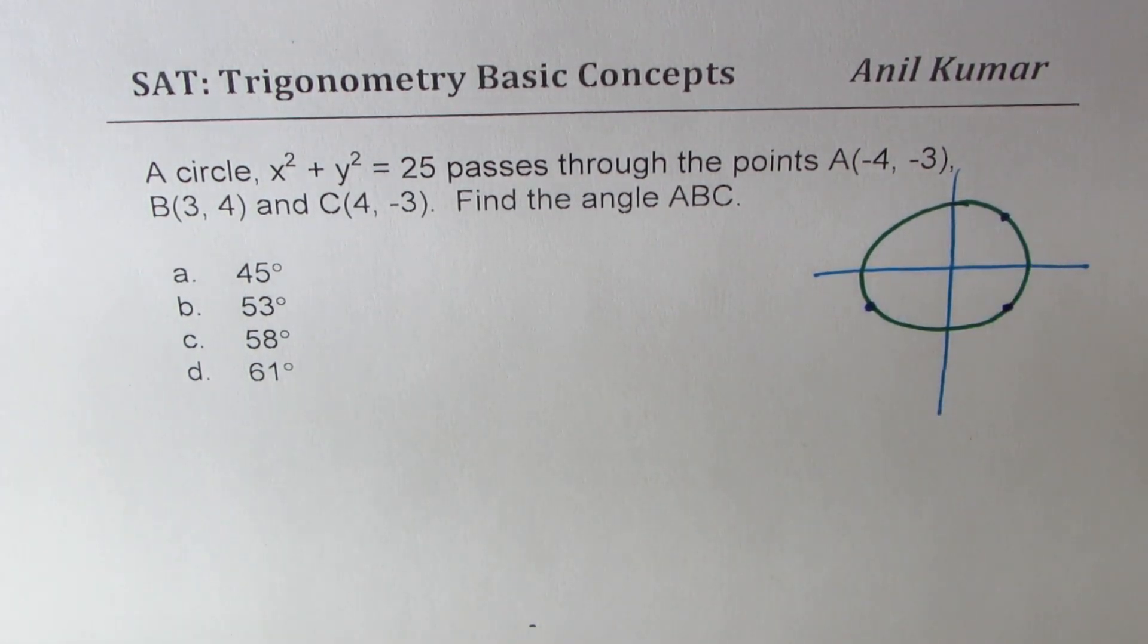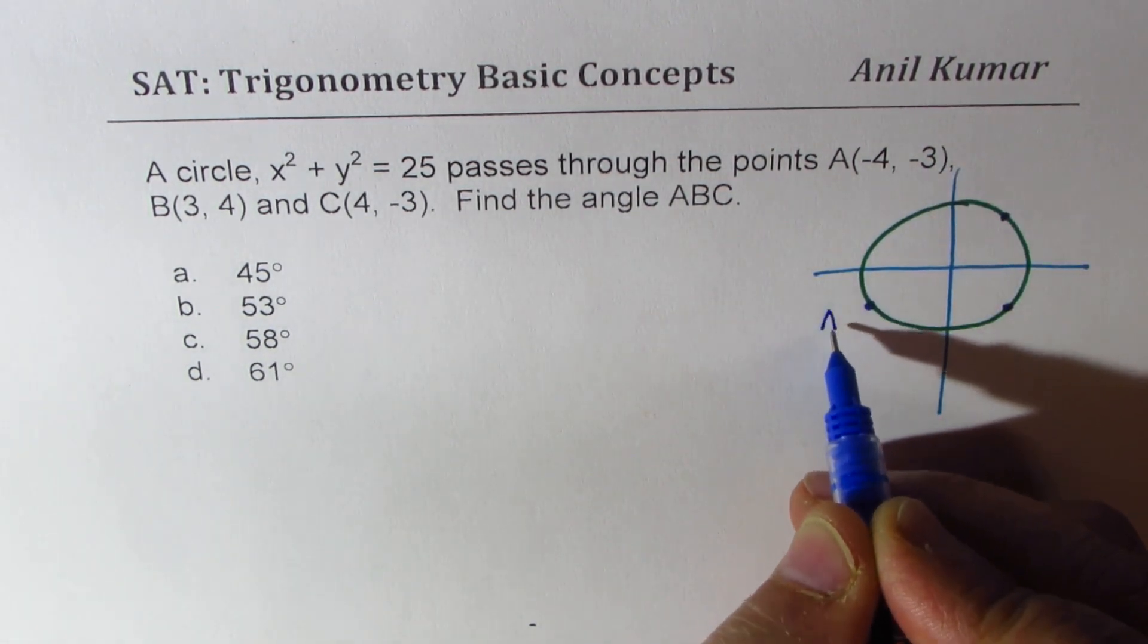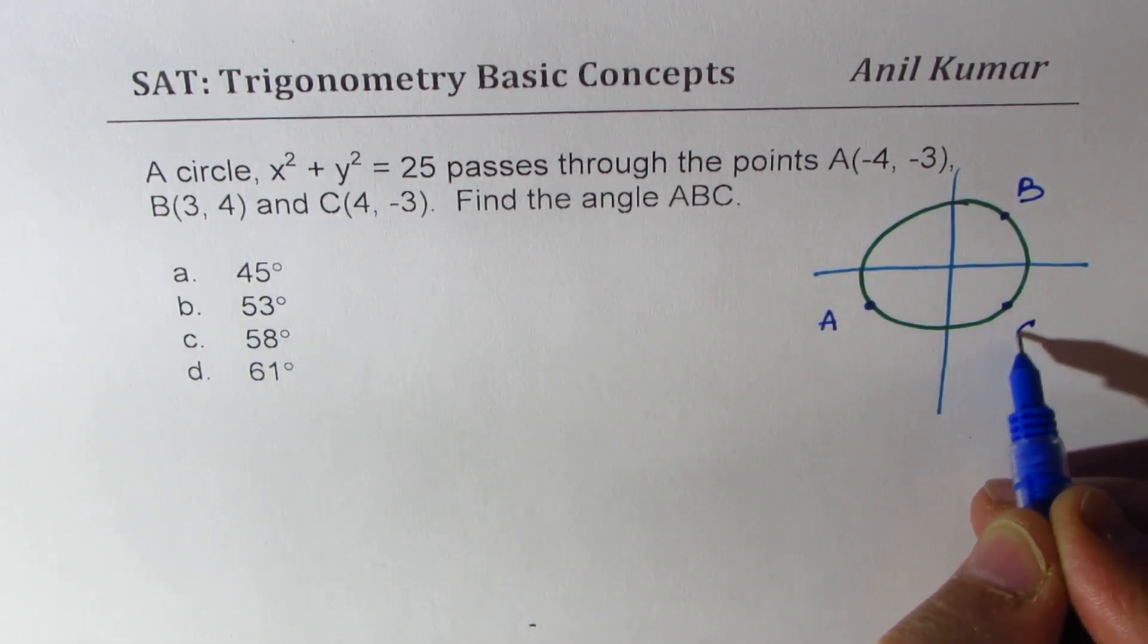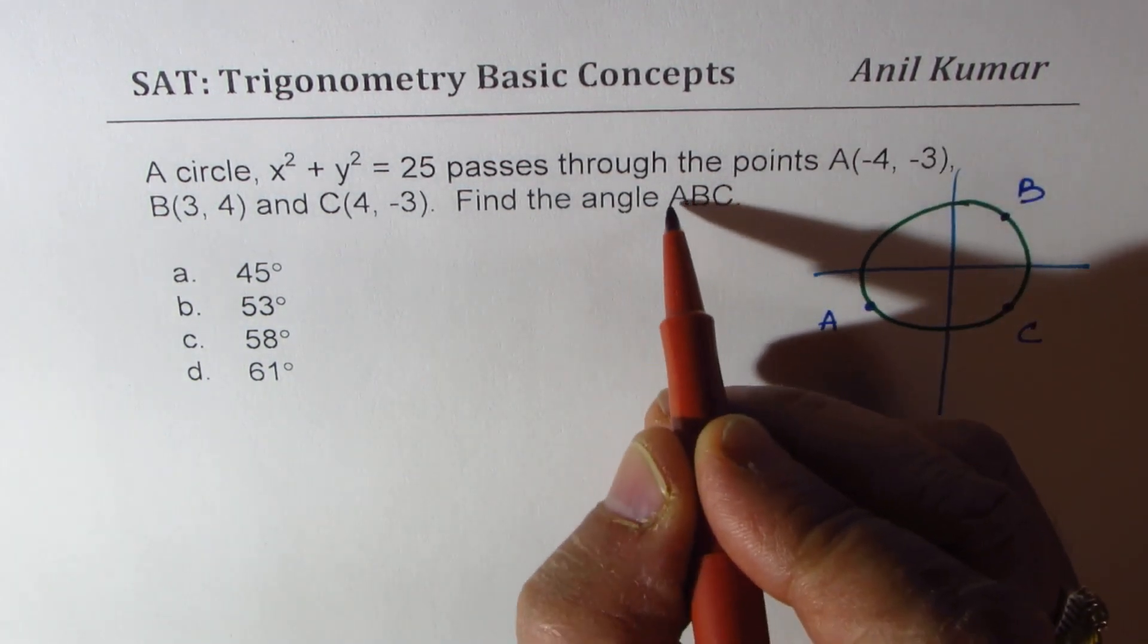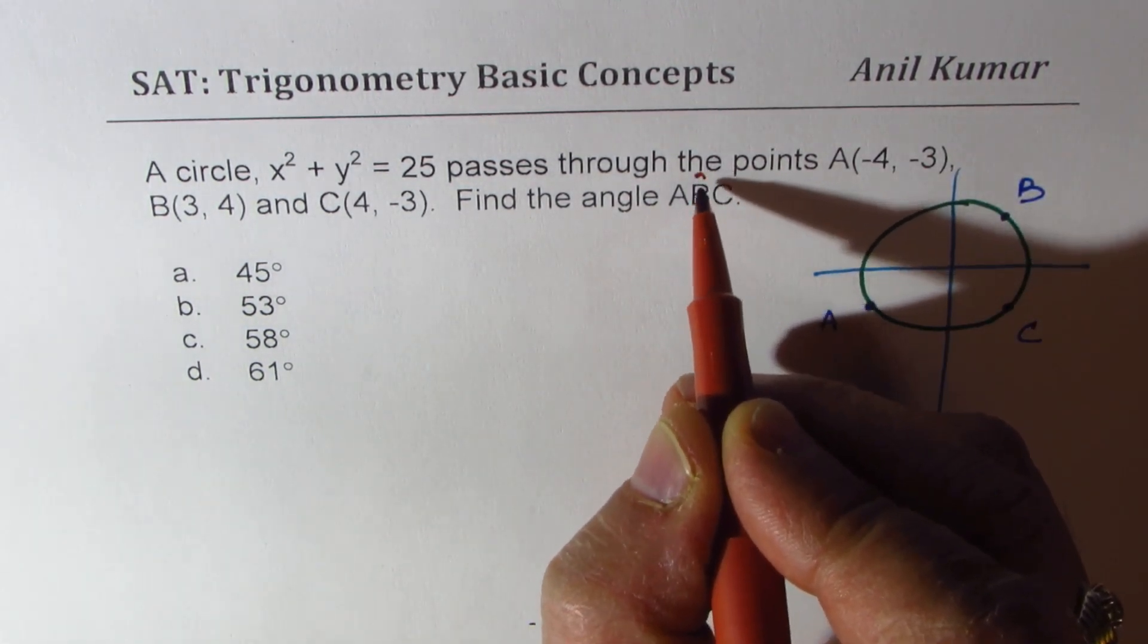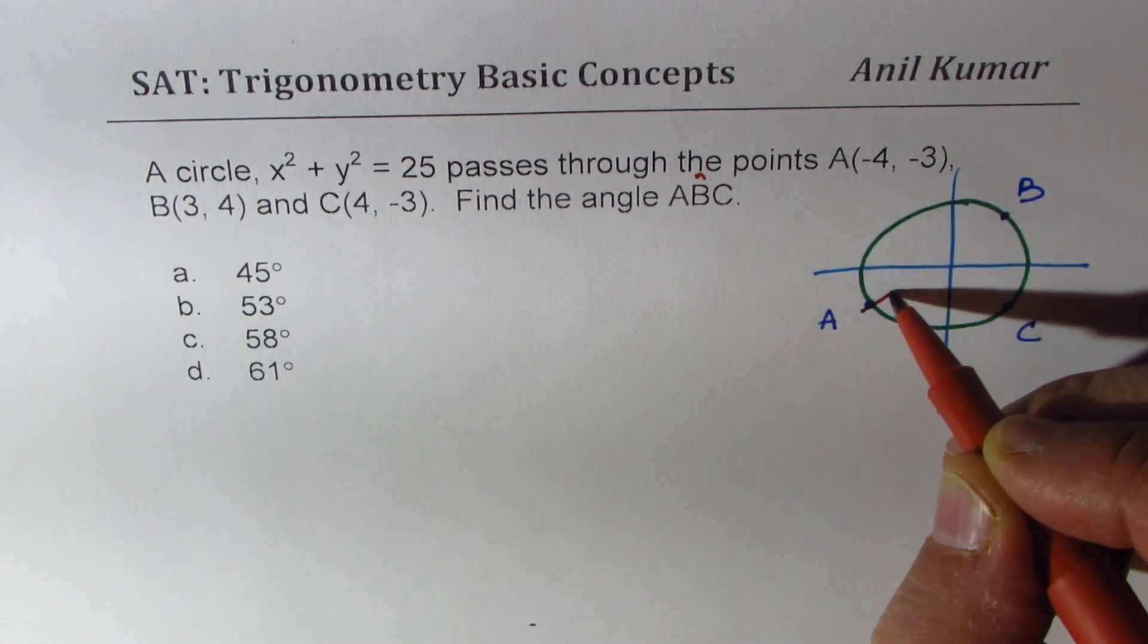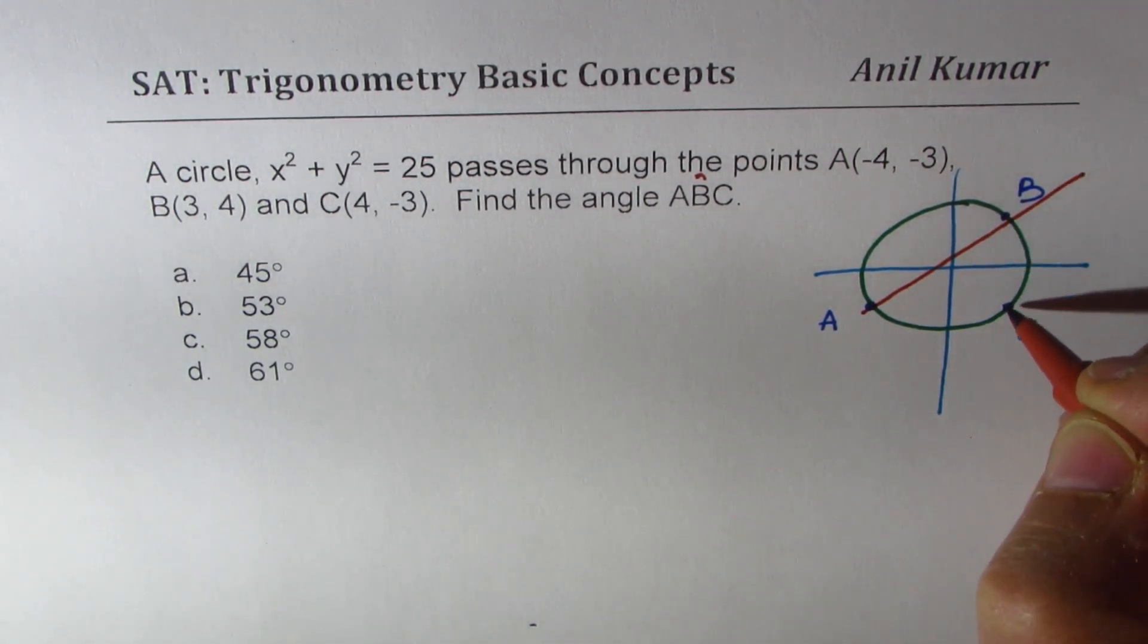So let's say these are the three points given to us. -4, -3 is point A, 3 and 4 is point B, and C is in quadrant 4 at 4, -3. The angle which we need to find is the angle ABC, that means this angle B. So from A let me draw a straight line here, so this is not to the scale but anyway, so assume this to be B right.